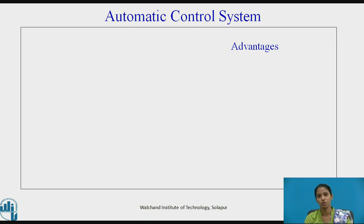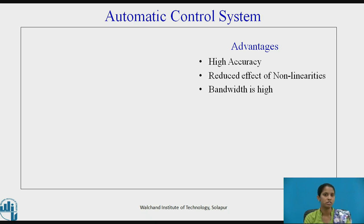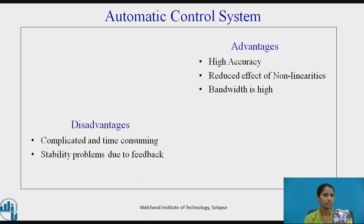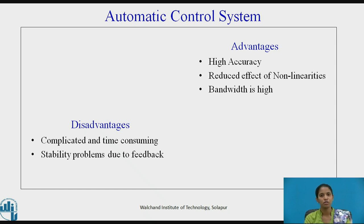Let us see the advantages of automatic control systems. It has high accuracy as compared to manual control systems. There are reduced effects of non-linearities and the bandwidth of automatic control systems is high. Disadvantages: as many systems are involved, it is complicated and time consuming. Many components are involved which leads to its complexity. Stability problems due to feedback.